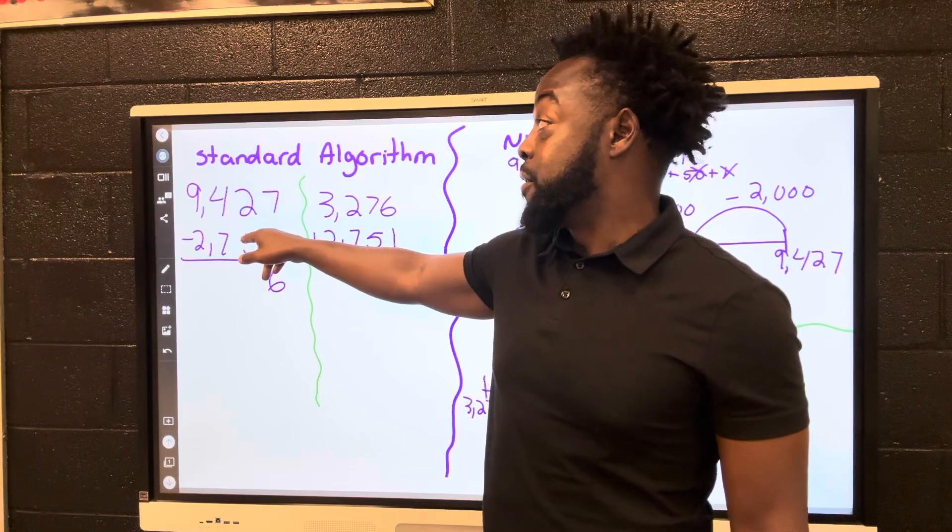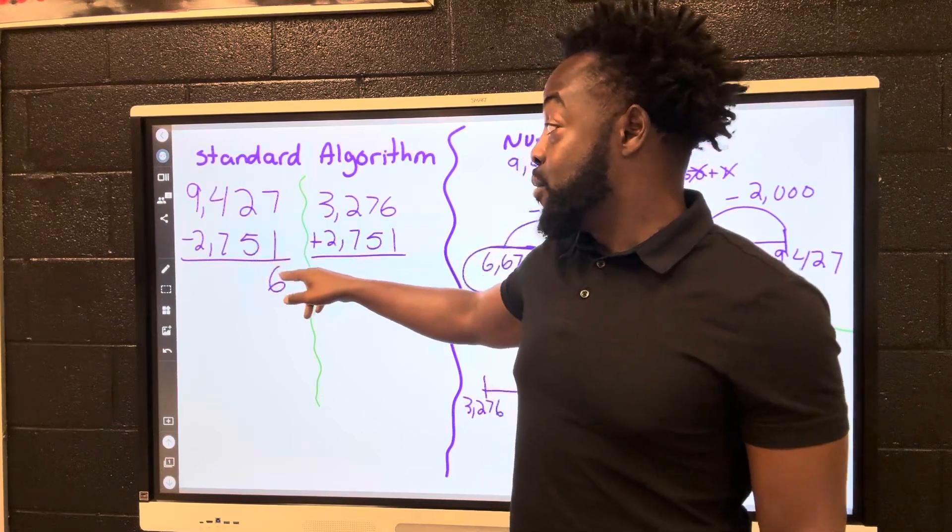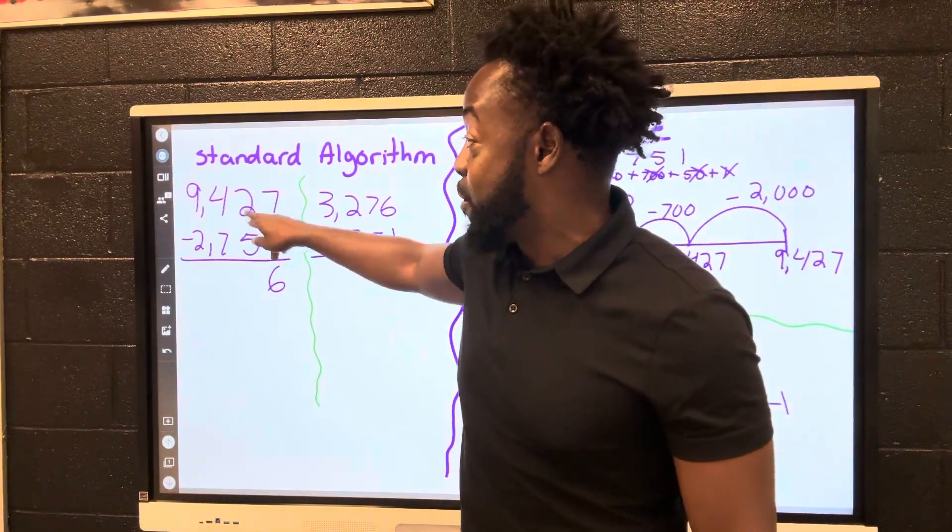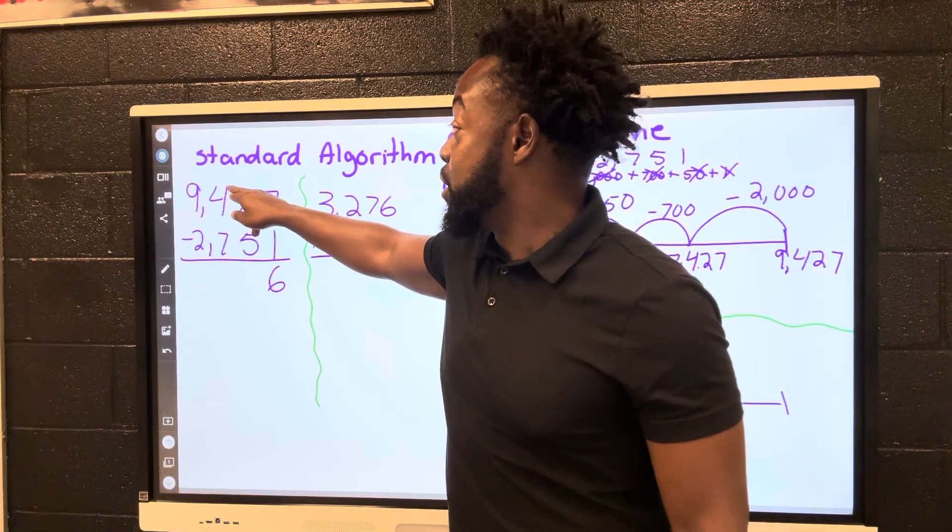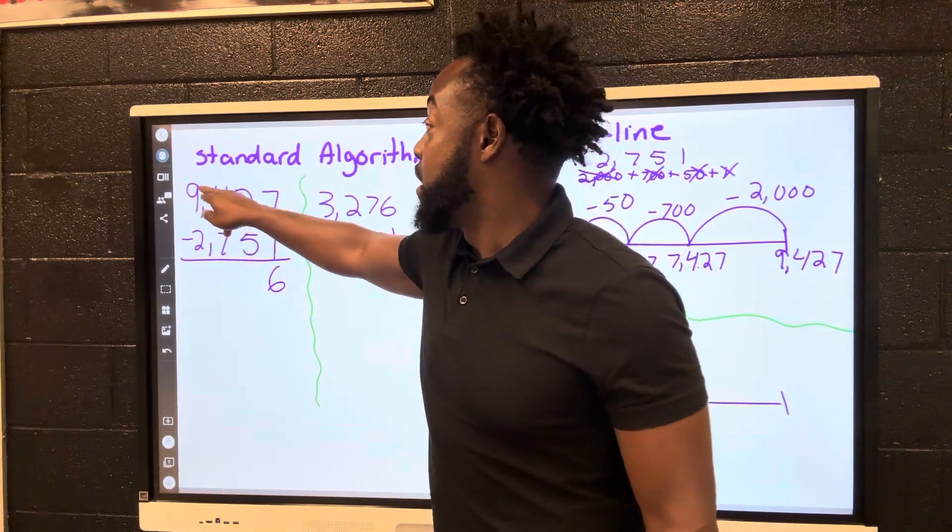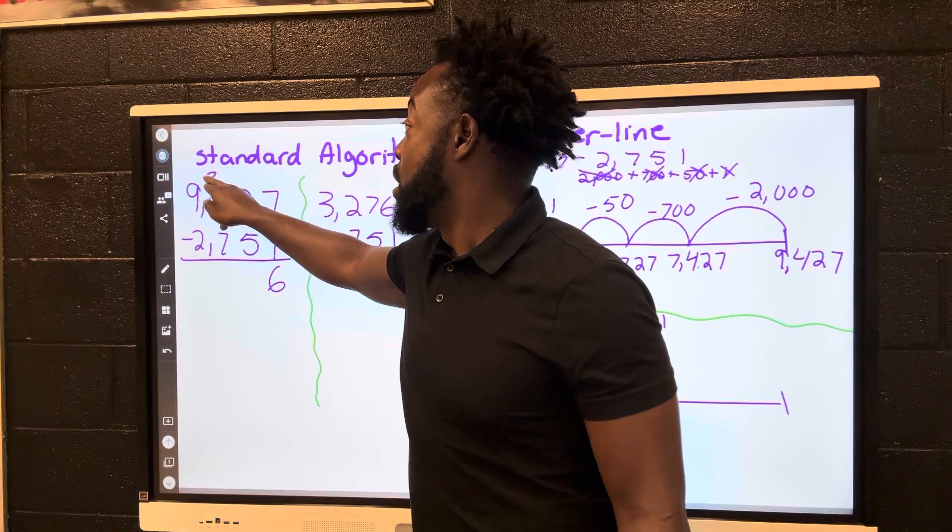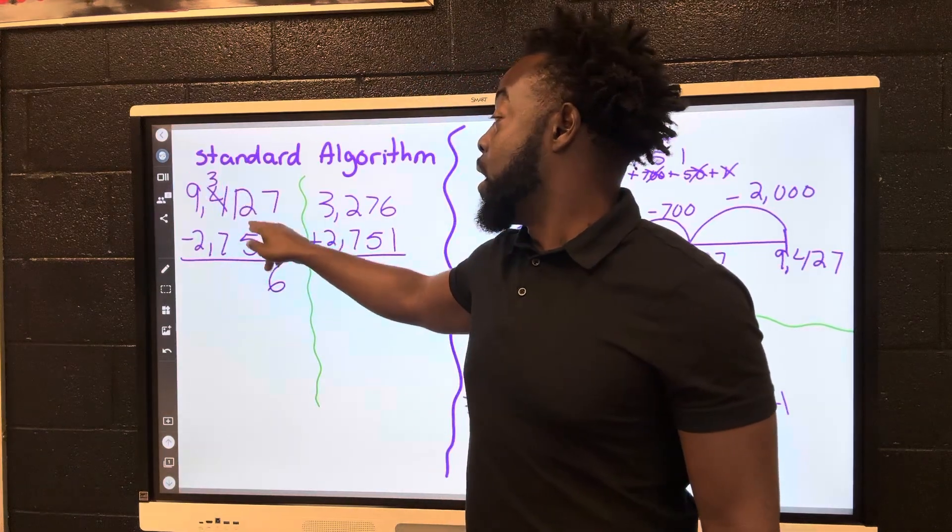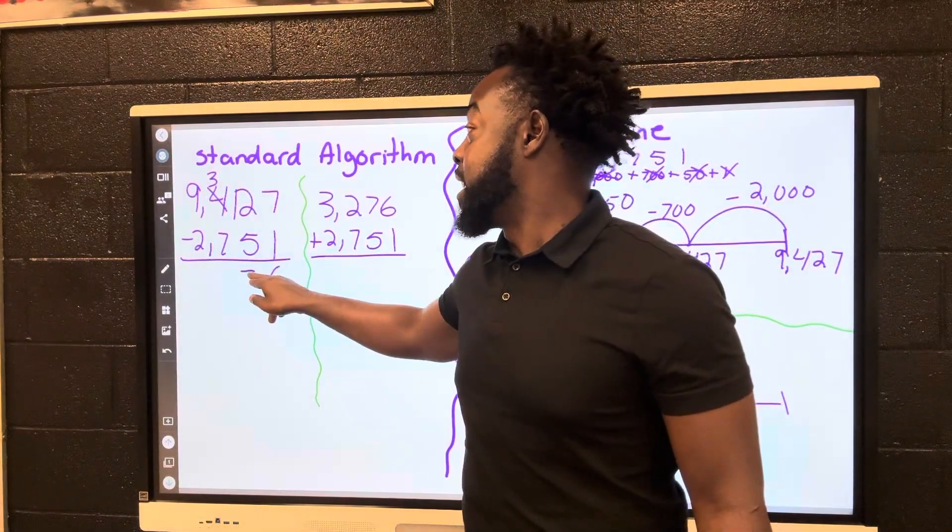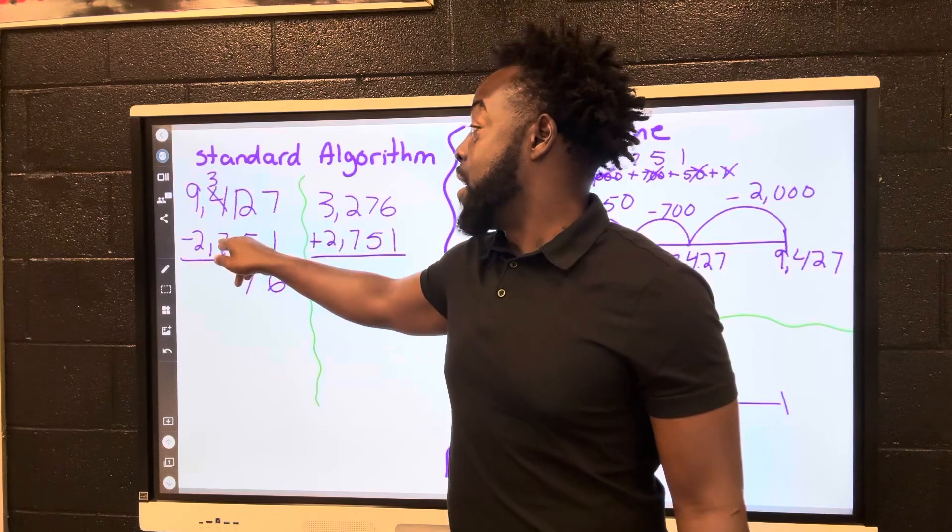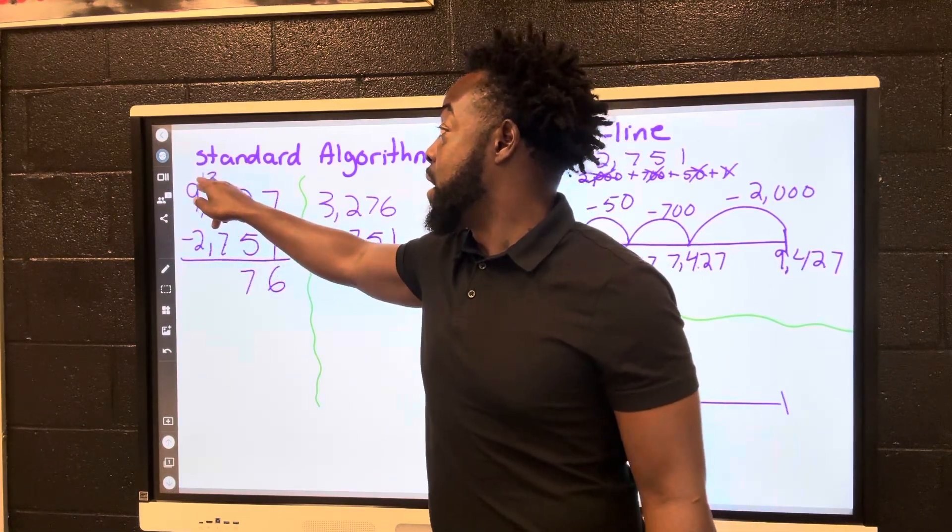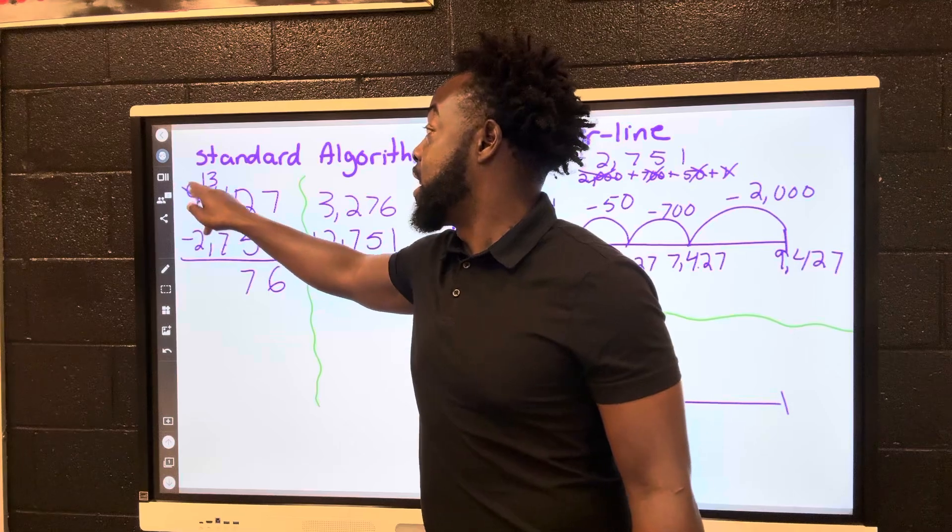So I've been teaching students to add 1, take 1 away. 12 minus 5 is 7. 3 minus 7, we can't do it, we add 1, take 1 away. 13 minus 7 is 6. 8 minus 2 is 6.